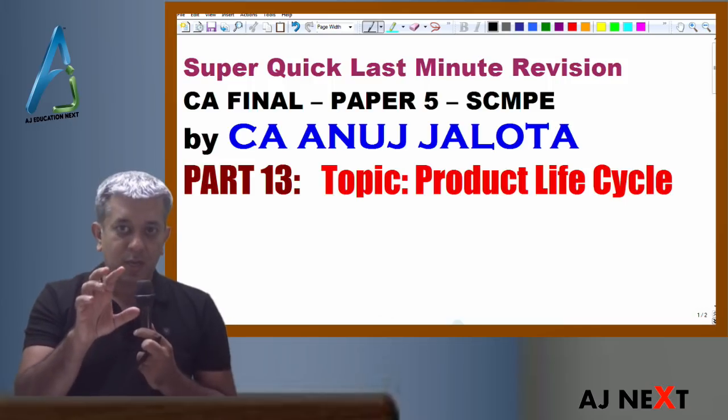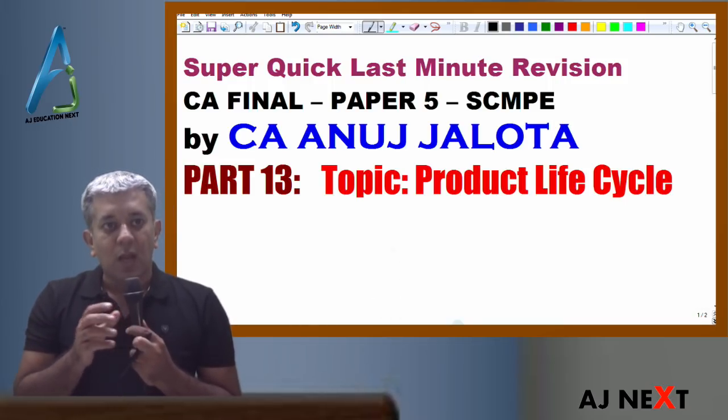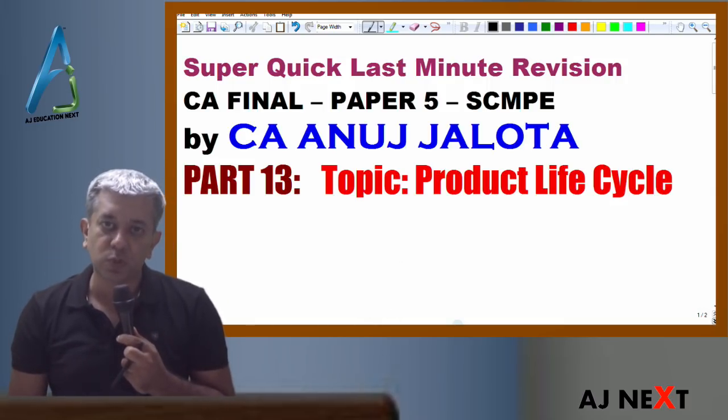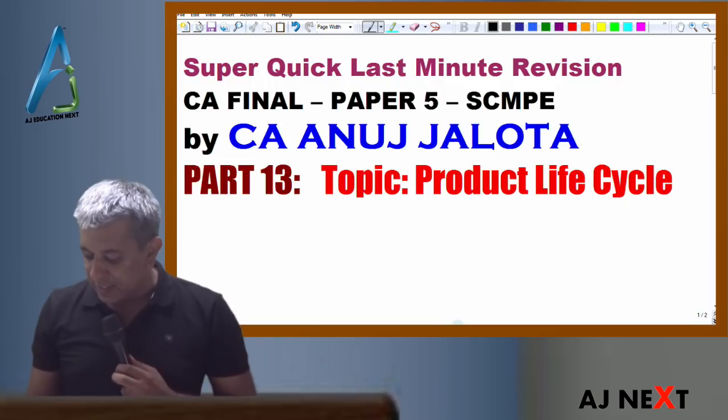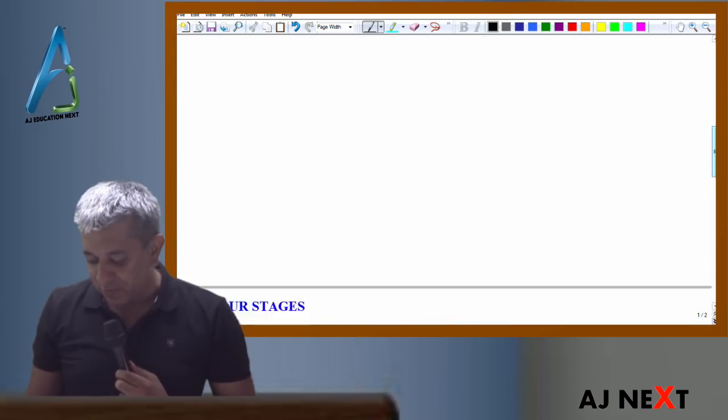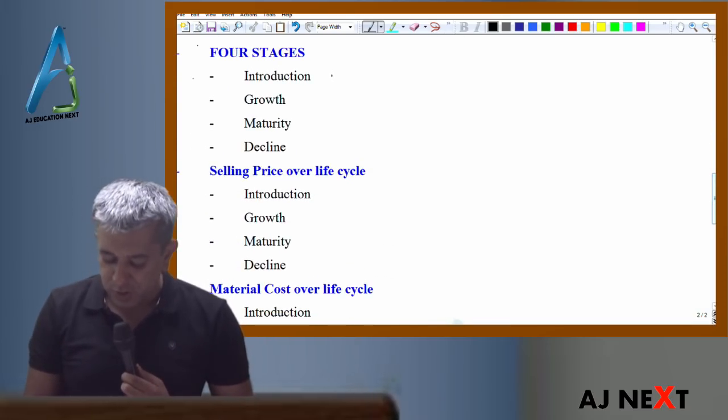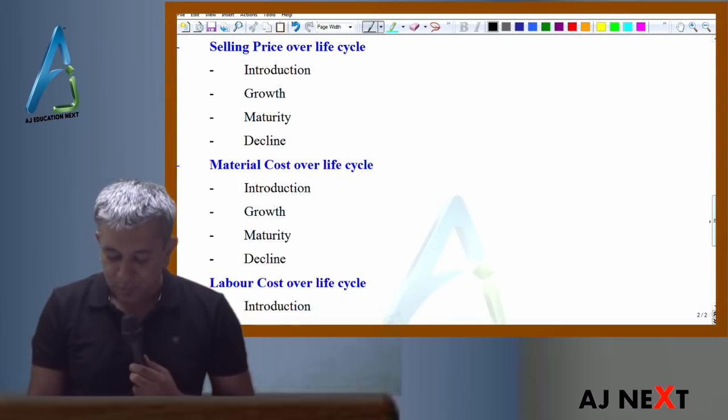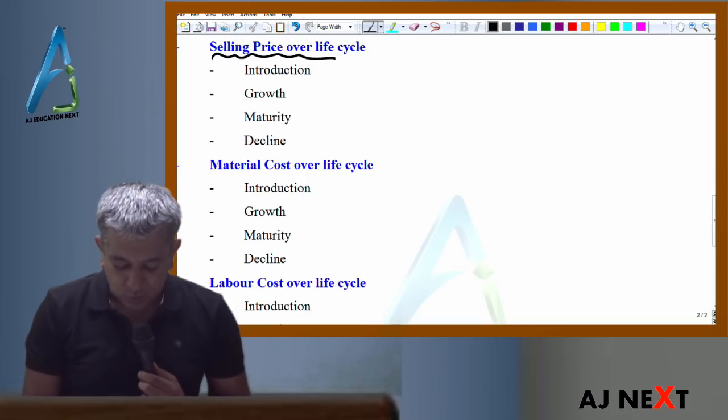Each stage has different characteristics. I cannot completely generalize things, but I can help you with a few things so that your questions can be revised. We are starting with the revision of product life cycle. Four stages: introduction, growth, maturity, decline. Now in each stage, how does selling price change?